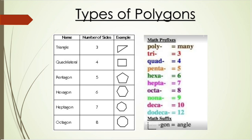Tri means three, quadra means four, penta means five, hexa means six, hepta means seven, octa means eight, nona means nine, deca means ten, and dodeca means twelve.